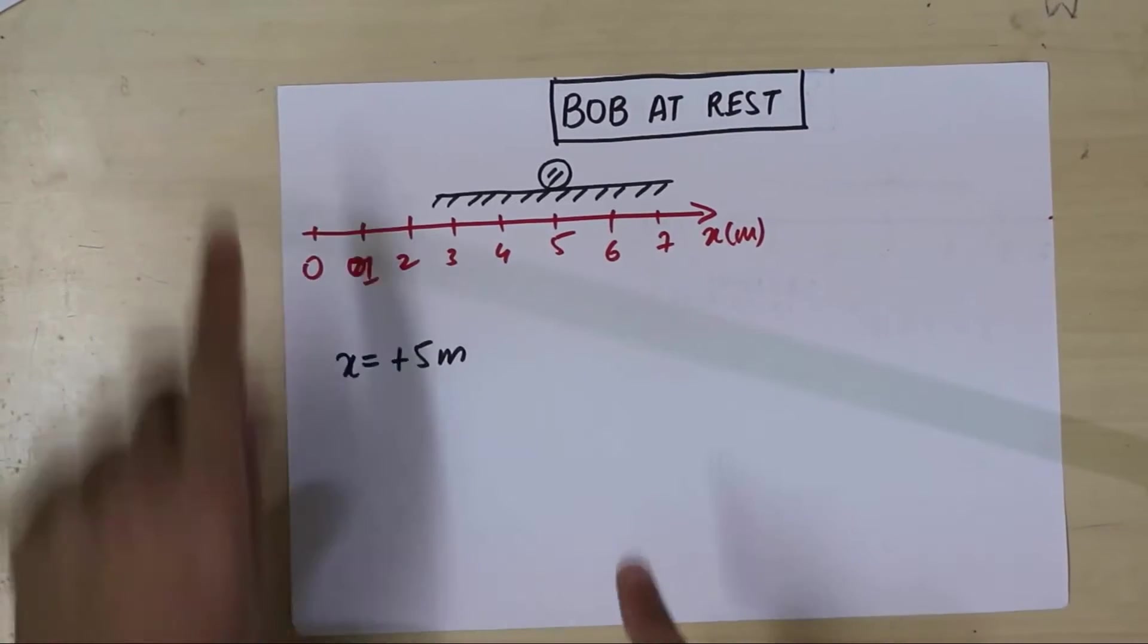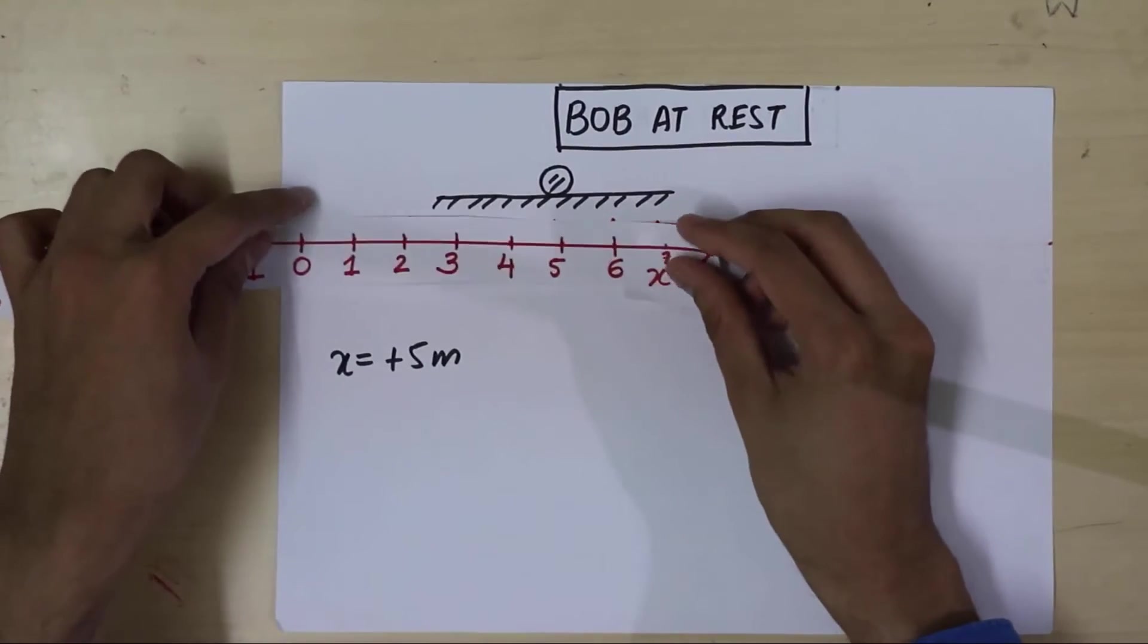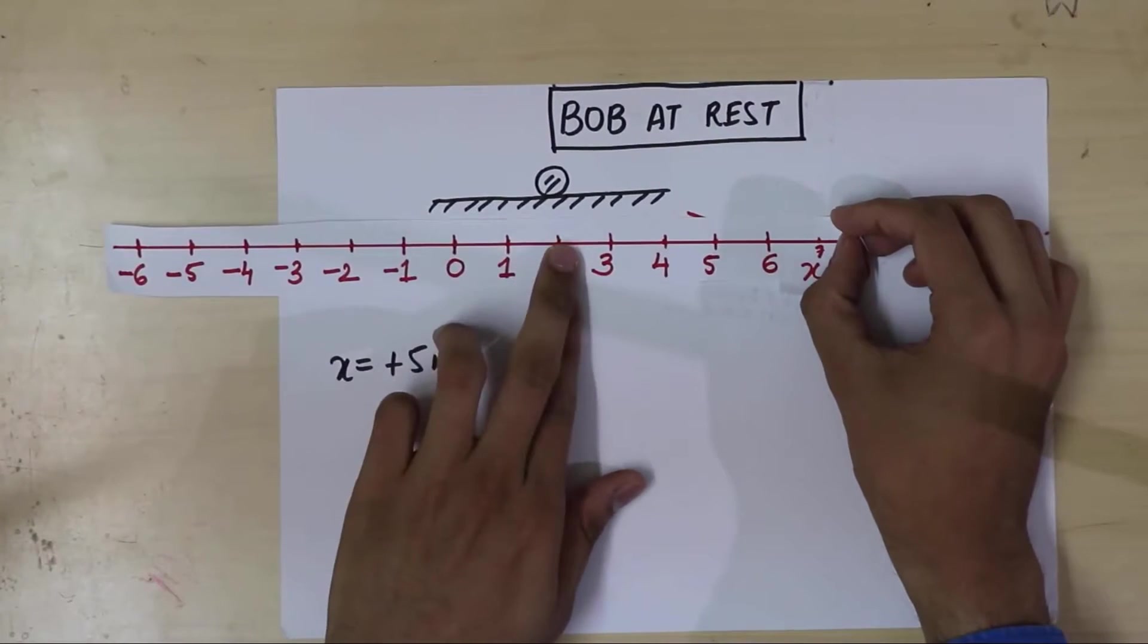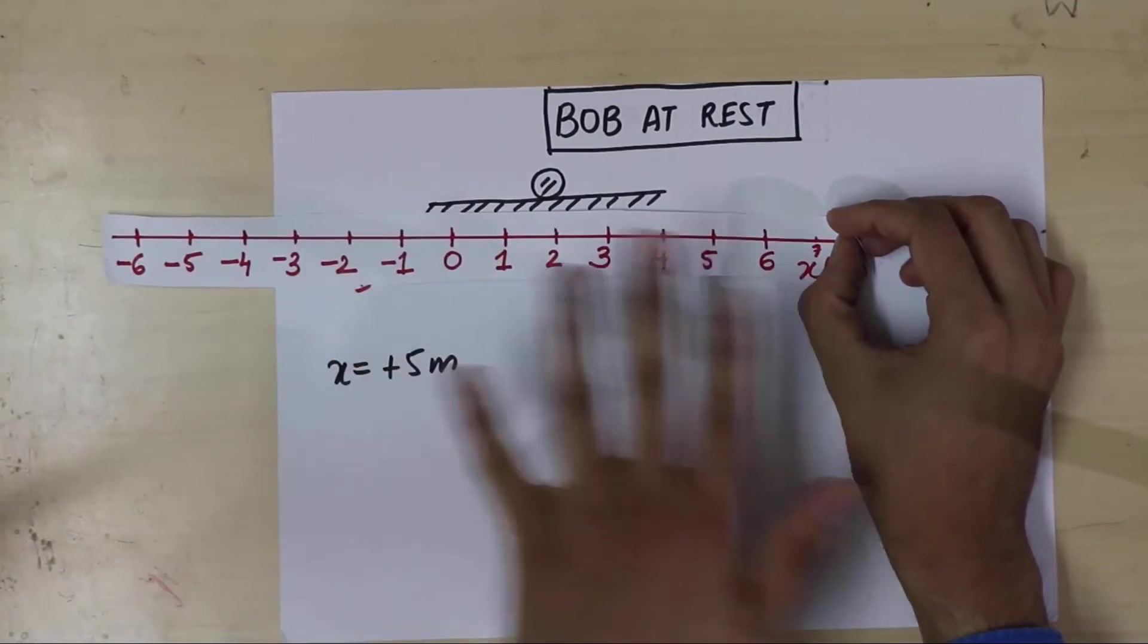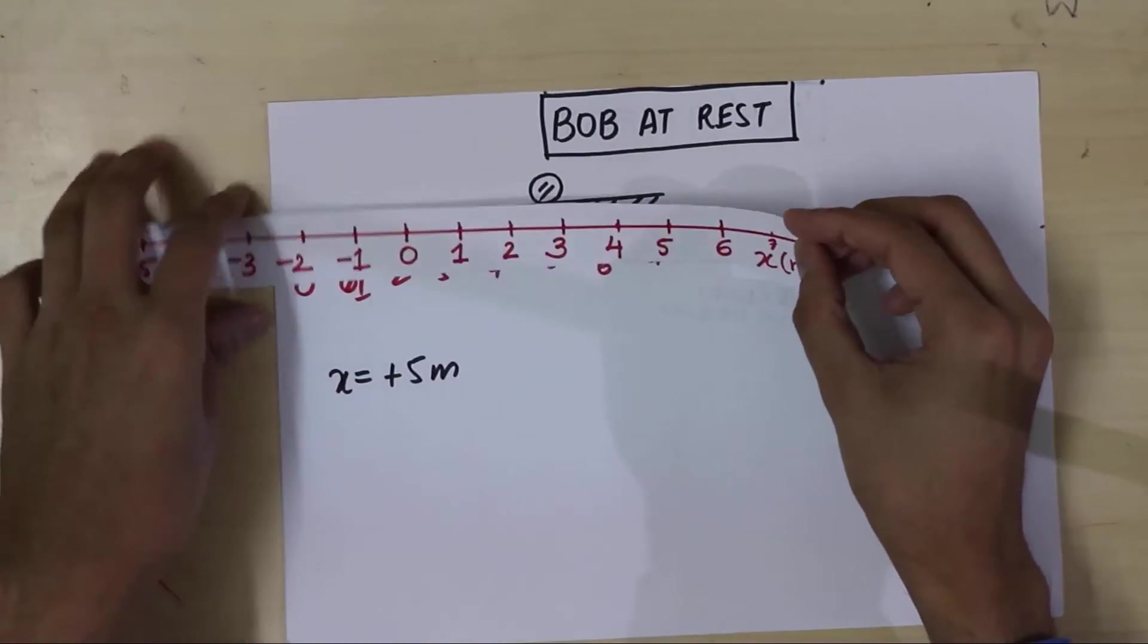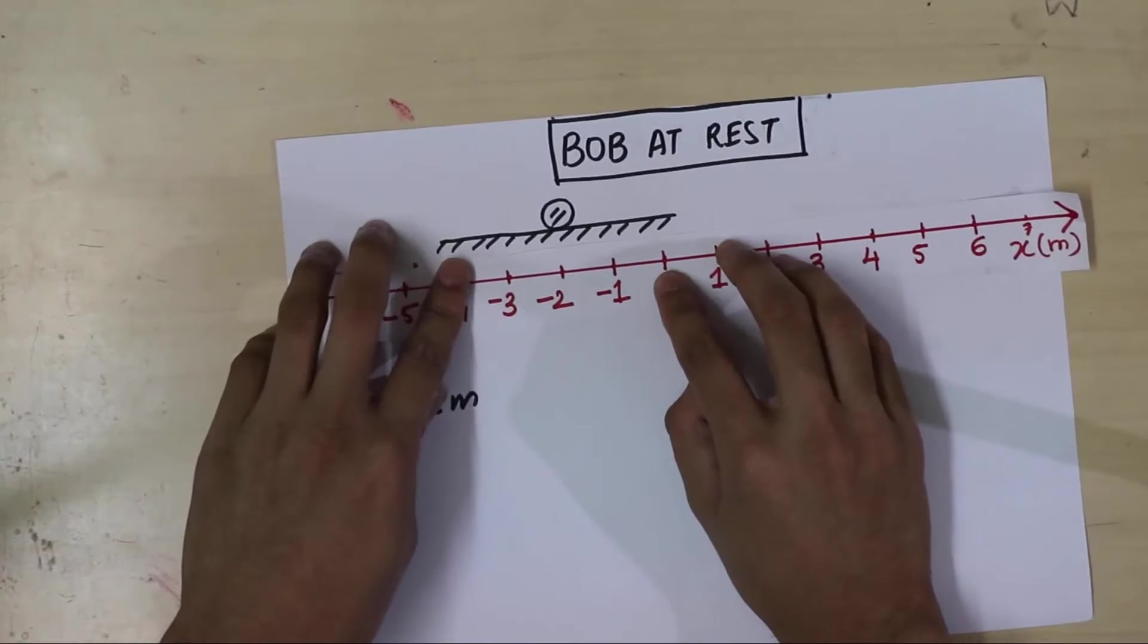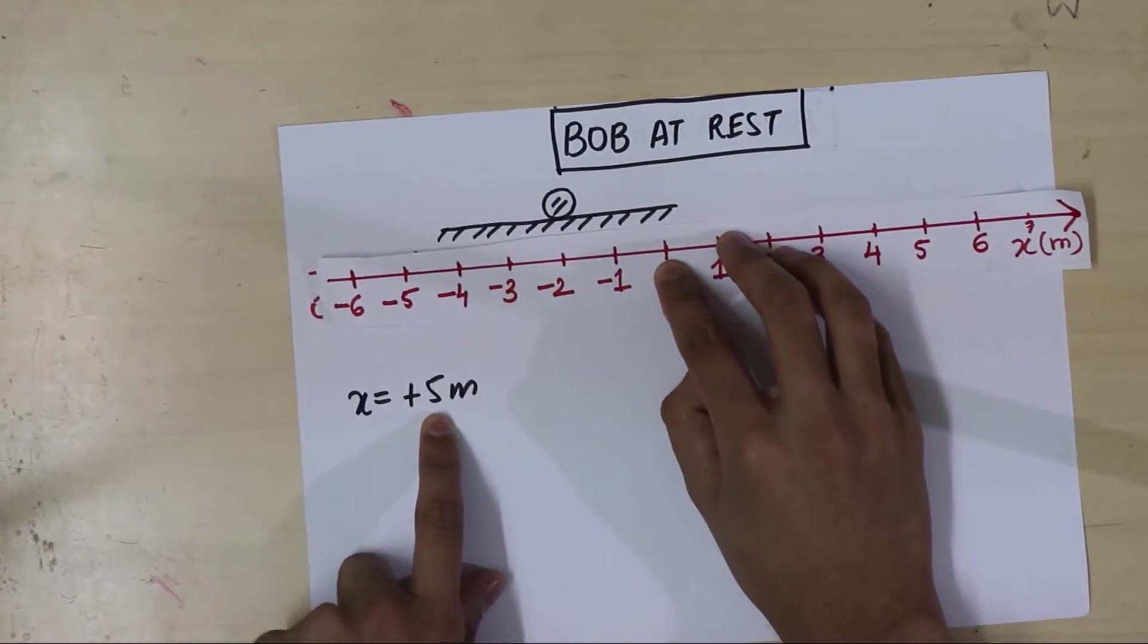Now, this 5 meters is the answer because I chose my origin over here. But what if I shifted my origin? Maybe let's say I chose my origin here. Then Bob would be at 2 meters. Just think about it. Bob has not moved. It's my axis that is moving. So nothing physical has moved. Yet the number might change. So the number depends on the origin. I could choose my origin over here. And now Bob's position would be minus 2 meters.